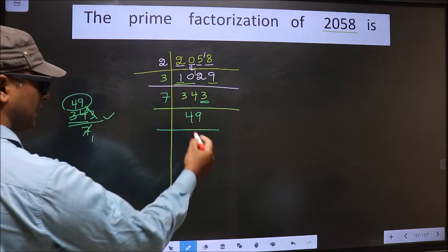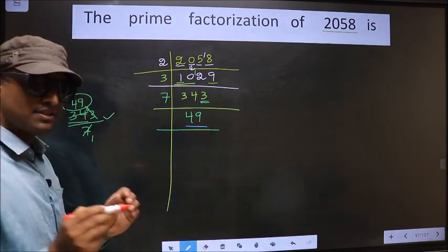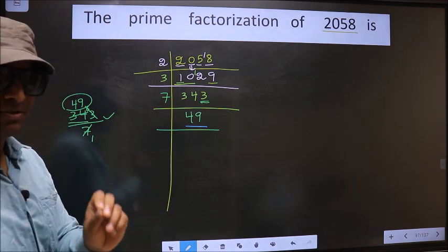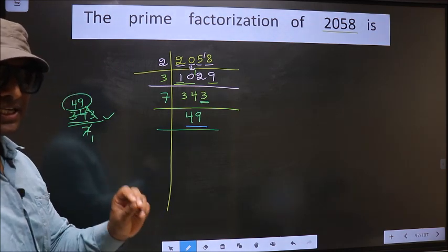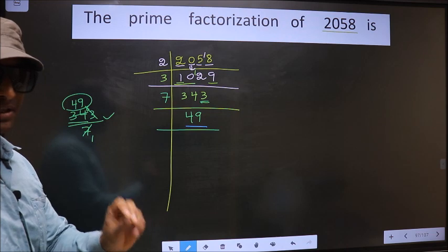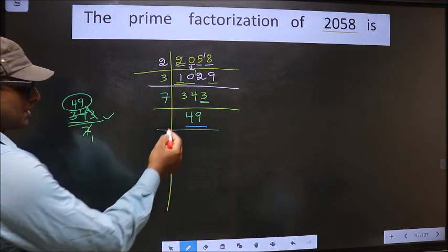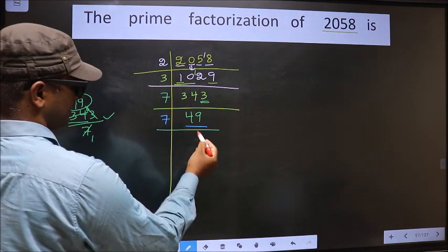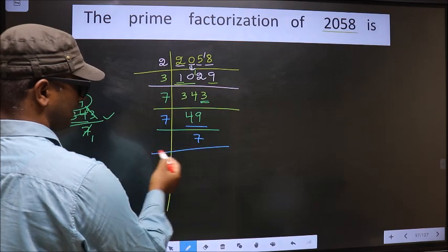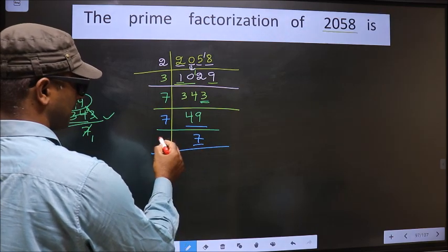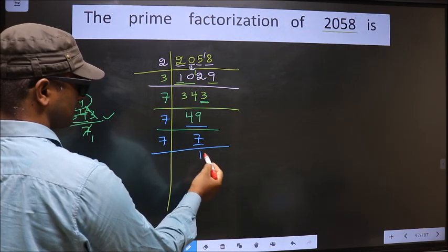Now here we have 49. Always remember, 7 squared is 49. 7 into 7 is 49. So here I take 7, here 7. Now we have 7. 7 is a prime number, so we take 7 ones 7.